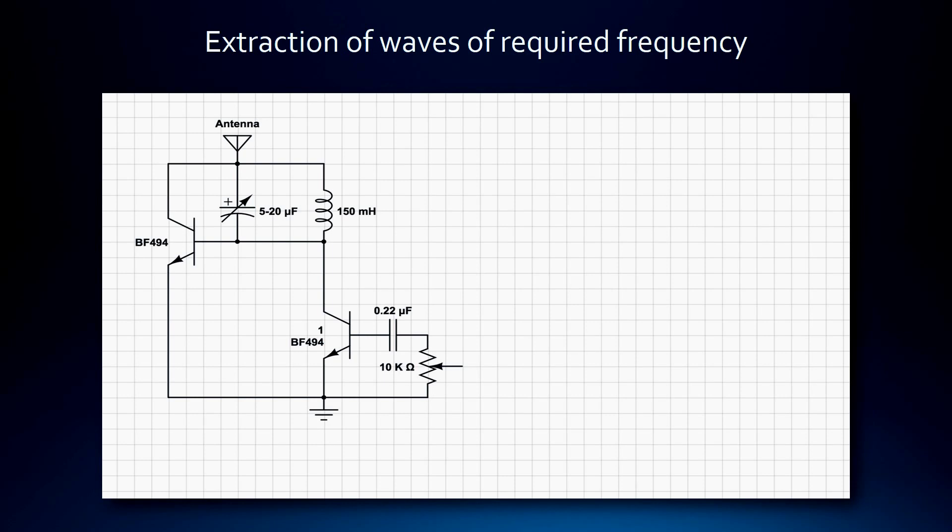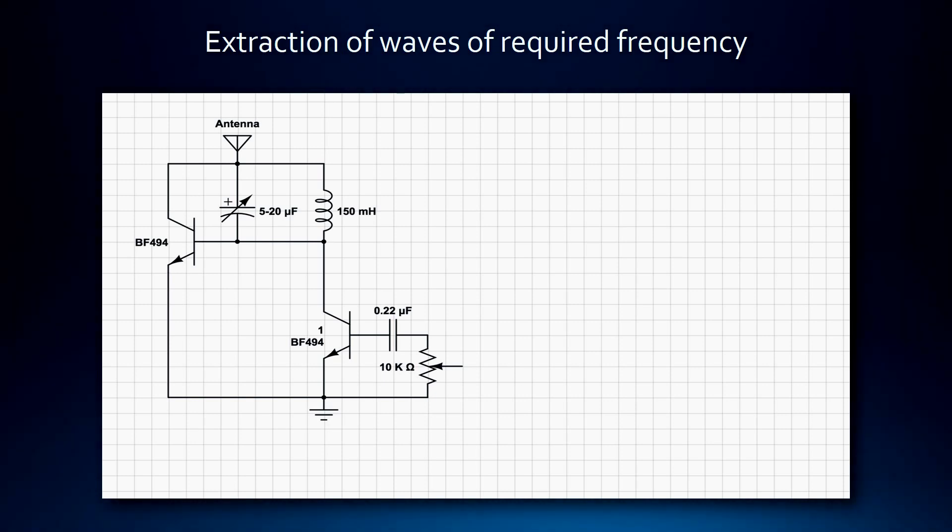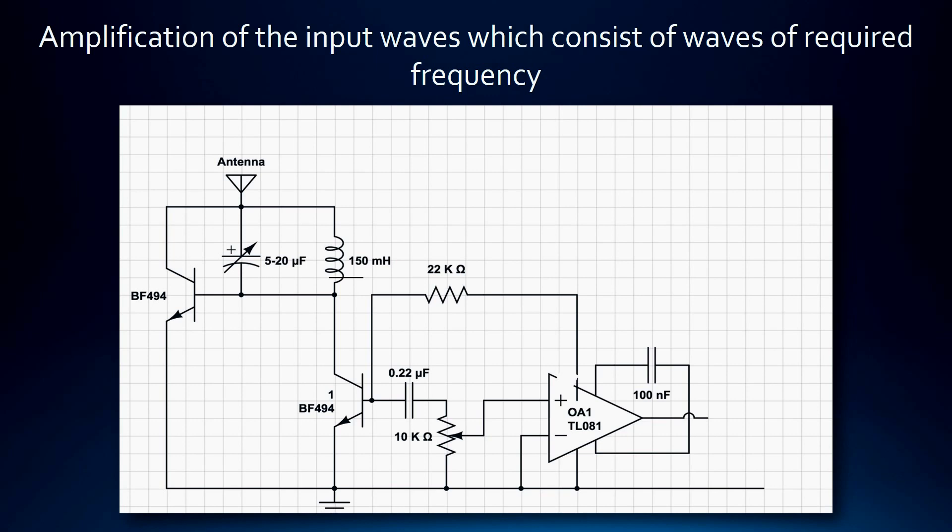The RC circuit made up of rheostat is then tuned by the user to ensure that only the waves of the desired frequency are allowed to pass through. Now, the signals consist of waves of the desired frequency which are amplified using the op-amp by a factor as high as 100%.